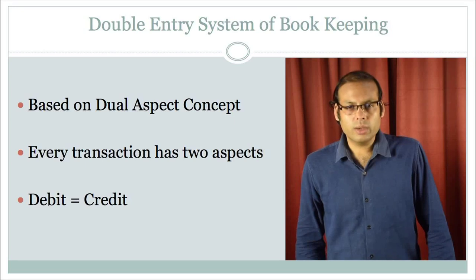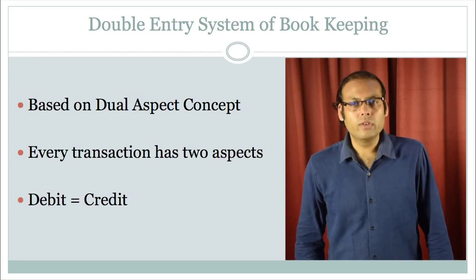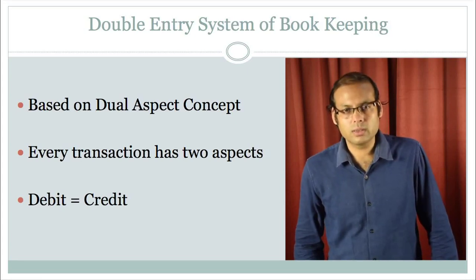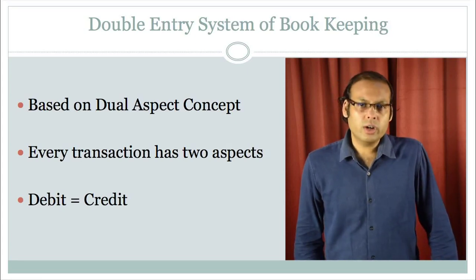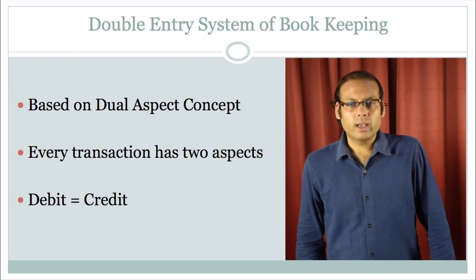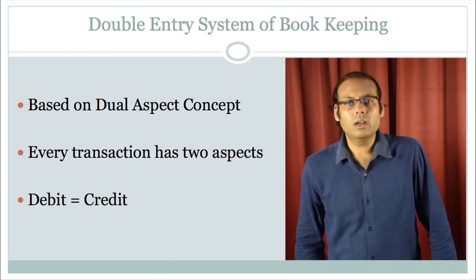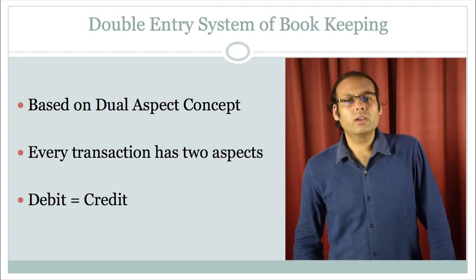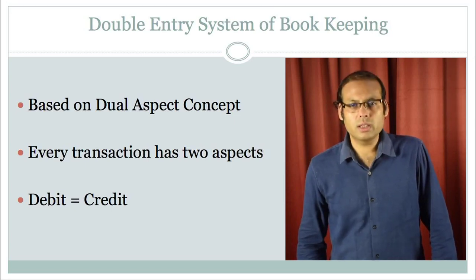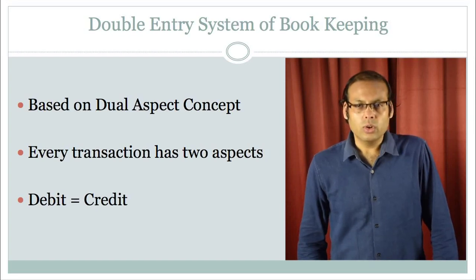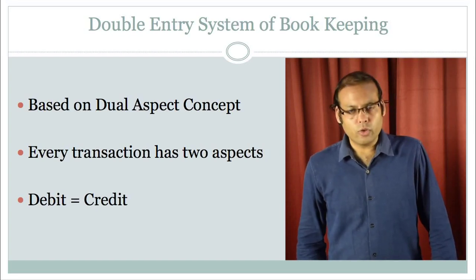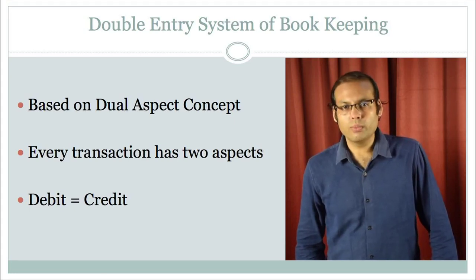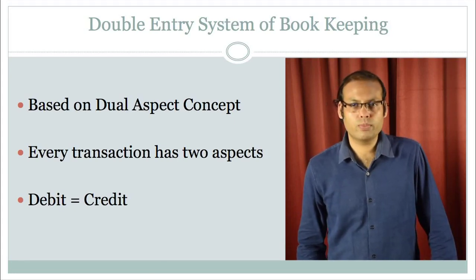According to this concept, each transaction will have two accounts — there will be two aspects of the same transaction. In the first part video, we showed the format of a particular account and discussed the terms debit and credit. So in a particular account there are two sides: debit and credit. That format is based on the double entry system, which is based on the dual aspect concept.